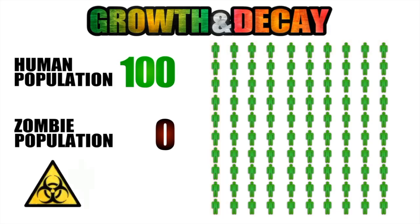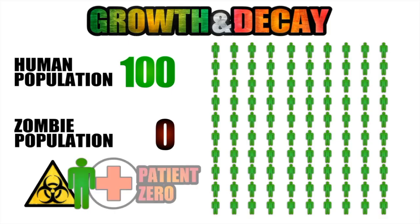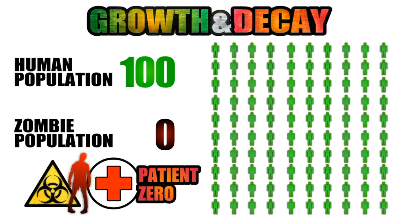Now at this point everything is okay until some incident happens and one member of that human population becomes infected. We refer to this as patient zero and now our human population drops to 99 and our zombie population is one.